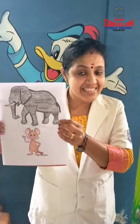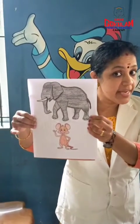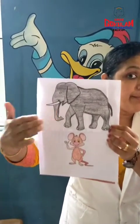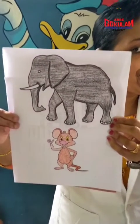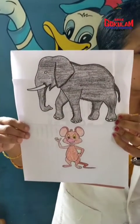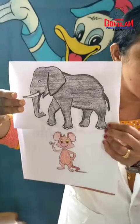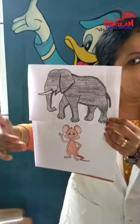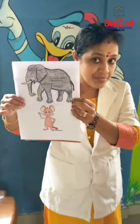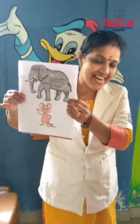Children, who is big? Jumbo is big. And Minnie is small. Jumbo is big. Minnie is small. Clear children?